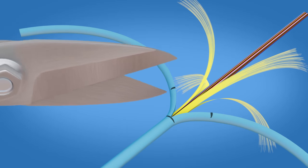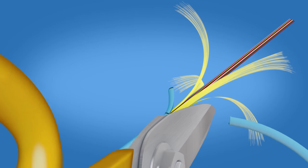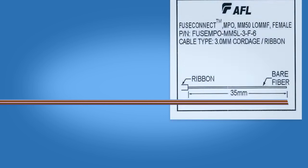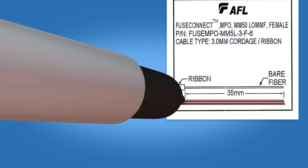Cut the jacket at the cut jacket mark. Do not cut the aramid yarn. Carefully insert the spring unit onto the fiber. Using the template on the packaging, mark the ribbon at 35 millimeters.